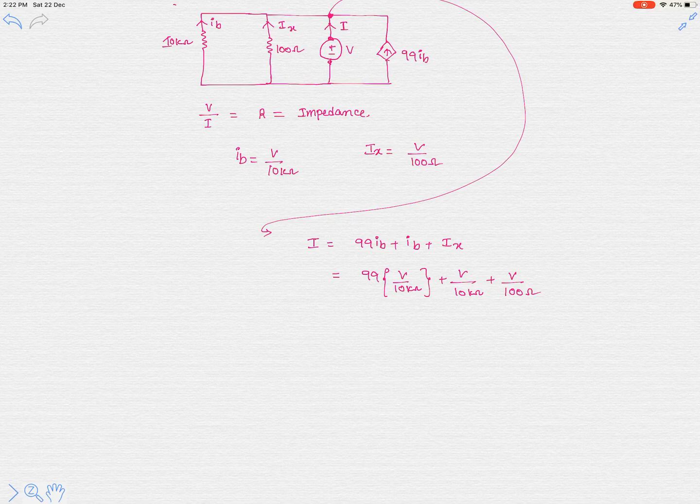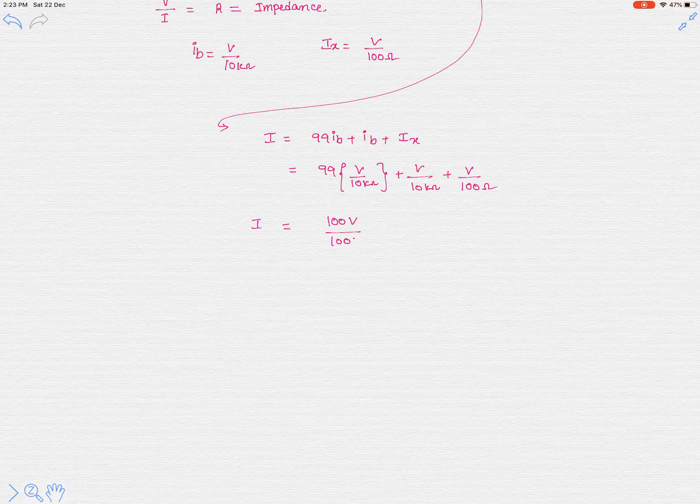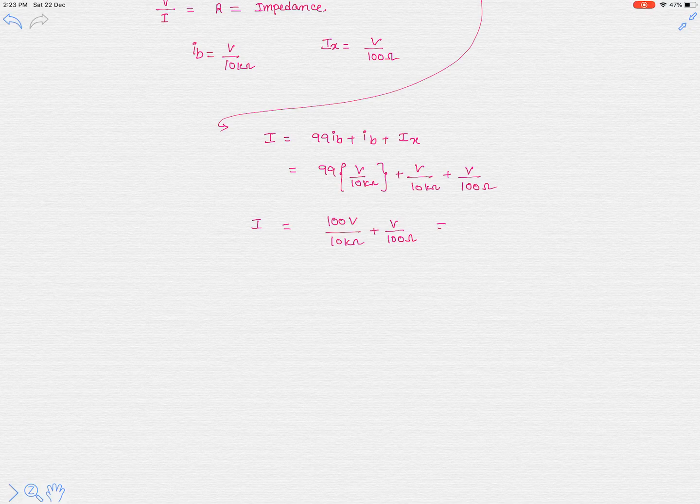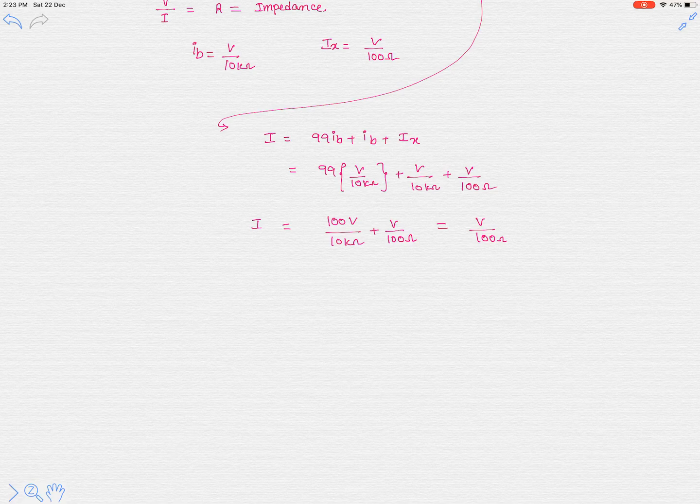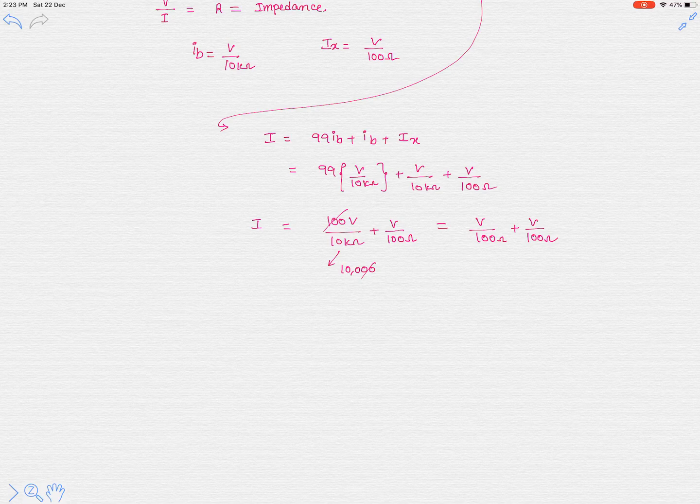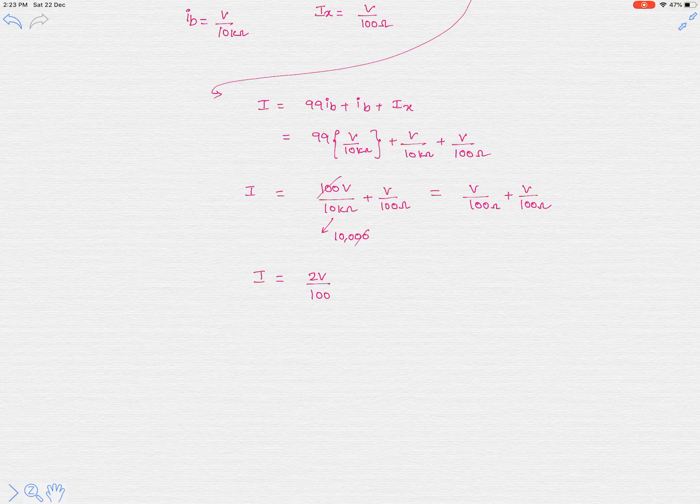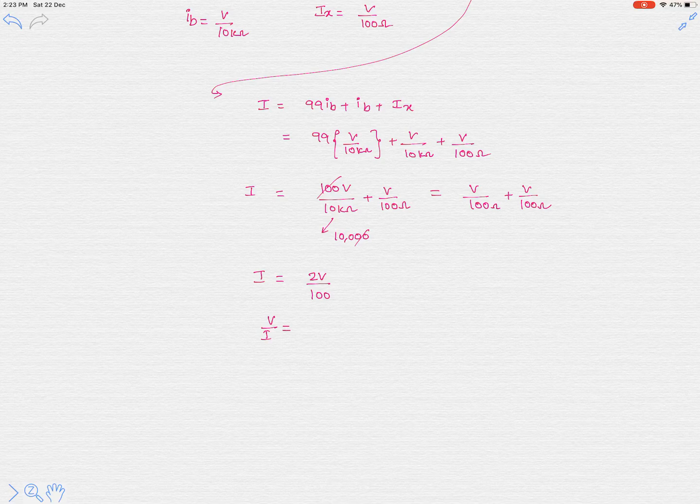Let's simplify this equation. This is 100V over 10 kilo-ohm plus V over 100 ohm. So it is V over 100 ohm plus V over 100 ohm. This is clear because 10 kilo-ohm is nothing but 100 squared. So we can simply divide to get I equals 2V over 100. Now V over I is the required impedance, so the impedance is 100 over 2, which is 50 ohm.